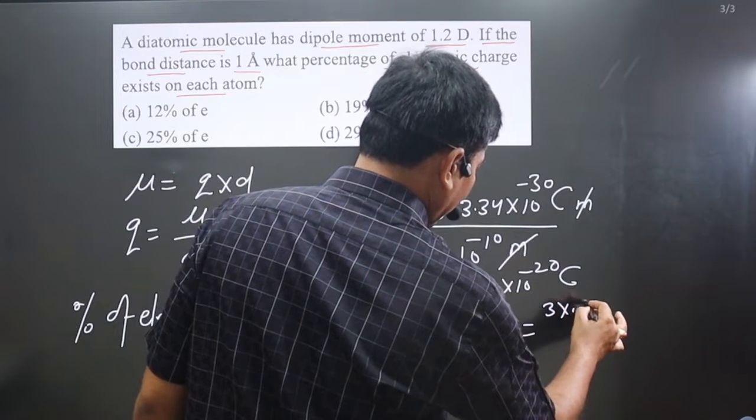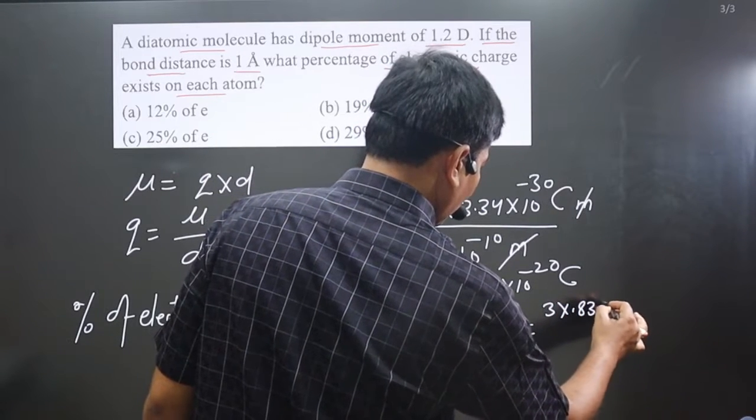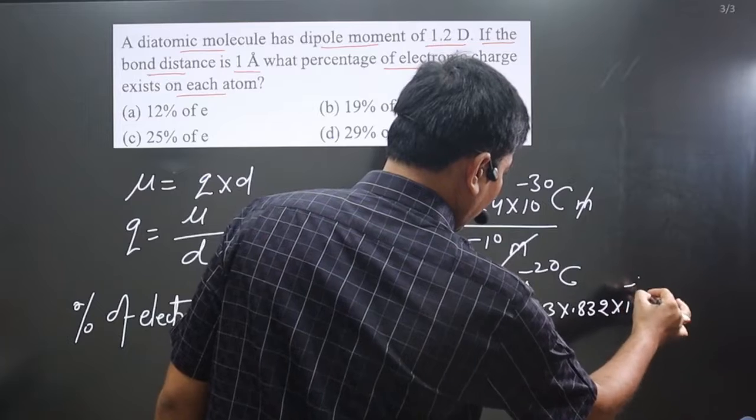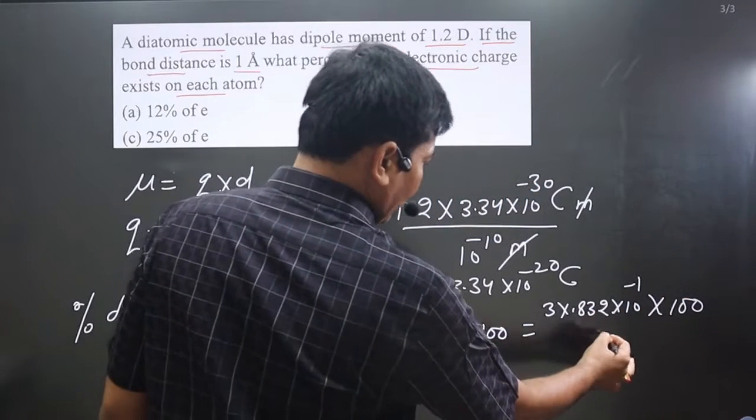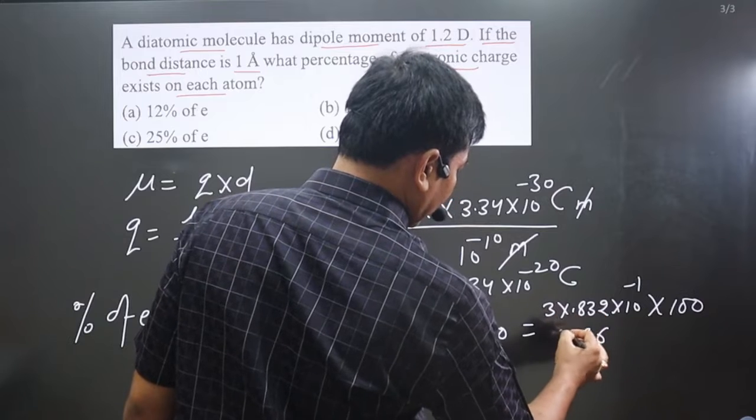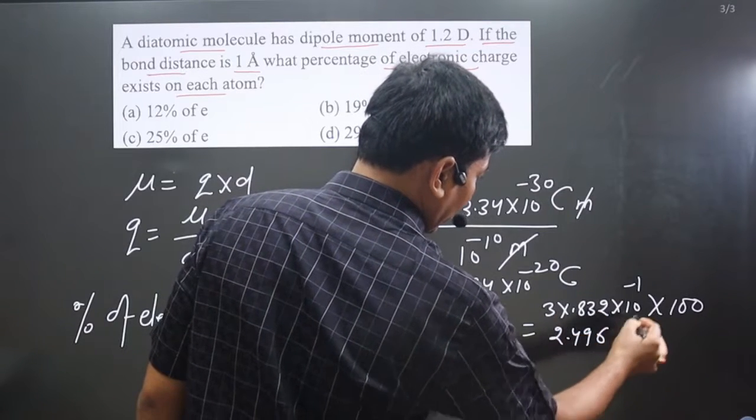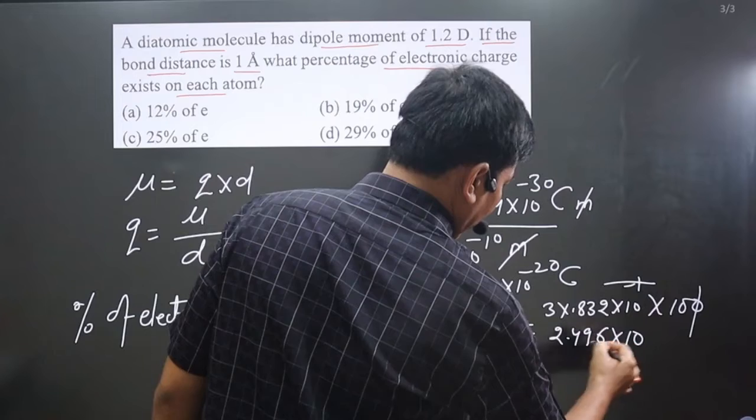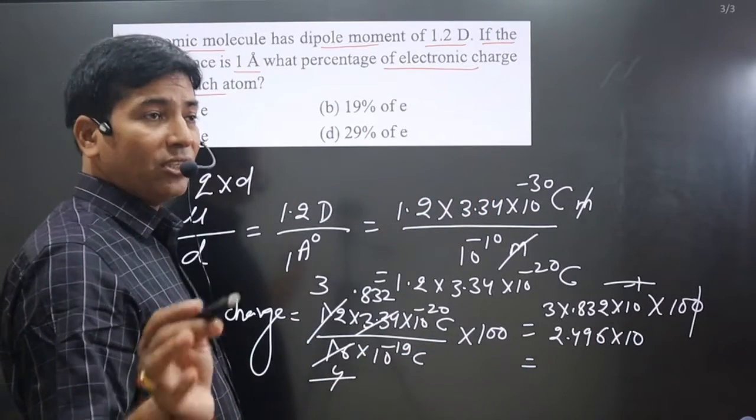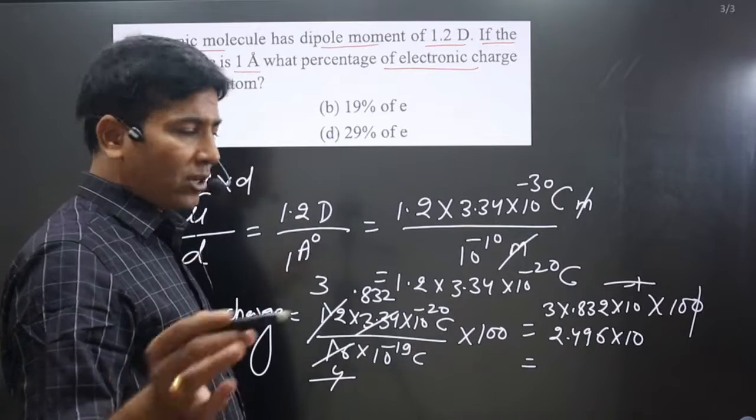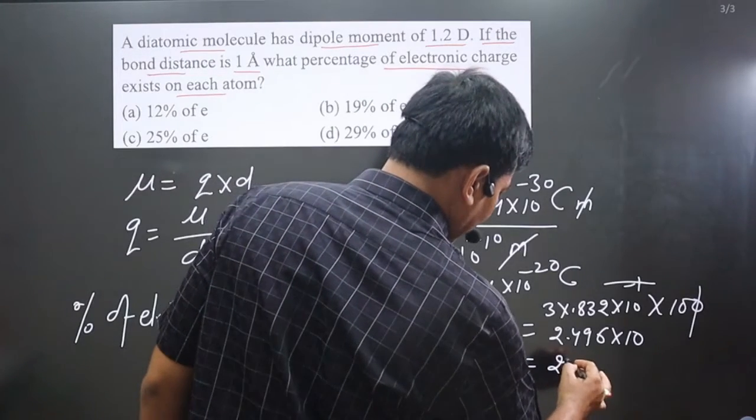We get 3 multiplied by 0.8 and this is 3, 2 multiplied by 10 to power minus 1 and multiplied by 100. Multiply 3, 2, 6, 3, 3, 9, 3, 8, 24 is there. 2.4. And if I cancel this one, so multiplied by 10 will be there. If you round up, it will be 24.96. If you round up, then we get 25% is there.